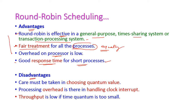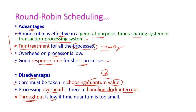Drawbacks of the round robin scheduling algorithm: care must be taken in choosing the quantum value, because based on the quantum value only the performance of round robin scheduling will be determined. There is processing overhead for handling clock interrupts, because every interrupt causes a context switch to save the status of the current process — this is additional overhead. Also, throughput is very low if the time quantum is too small.